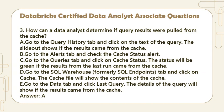Question 3. How can a data analyst determine if query results were pulled from the cache? A. Go to the Query History tab and click on the text of the query. The slide-out shows if the results came from the cache. B. Go to the Alerts tab and check the cache status alert. C. Go to the Queries tab and click on Cache status. The status will be green if the results from the last run came from the cache. D. Go to the SQL Warehouse tab and click on Cache. The cache file will show the contents of the cache. E. Go to the Data tab and click Last Query. The details of the query will show if the results came from the cache. Answer: A.